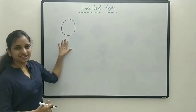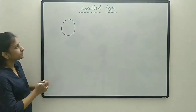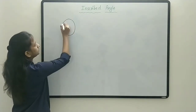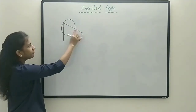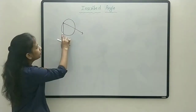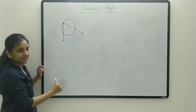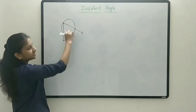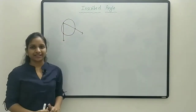Here I have drawn a circle. Let's see what an inscribed angle is. If we draw an angle like this, the vertex lies on the circle and the two endpoints also lie on the circle — meaning there are three common points for the angle and the circle. This is called an inscribed angle.